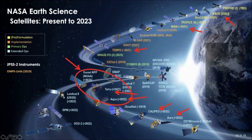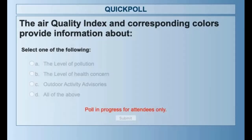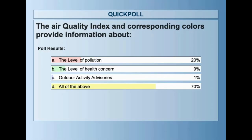Let's take a quick break for a couple of questions. The first question is: 'The air quality index and corresponding colors provide information about...' with four answer options. The correct answer is D — all of the above. The AQI shows the level of pollution, level of health concern, and outdoor activity advisories.